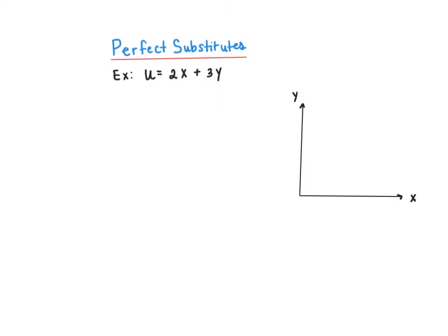Consider this example of a perfect substitutes utility function: u equals 2x plus 3y. One way of drawing an indifference curve for this function is to fix u equal to some constant value and then solve for good y, since it's on the y-axis. The signs of dy/dx and d²y/dx² will then show us what an indifference curve looks like.